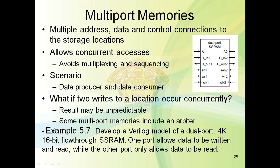Now we will discuss an example from the prescribed book — example 5.7: develop a Verilog model of a dual port memory, 4K × 16 bit, flow-through. It is a dual port memory where one port allows data to be written and read, while the other port only allows data to be read.